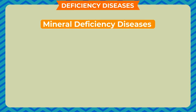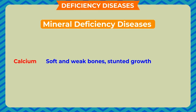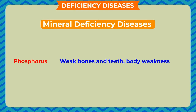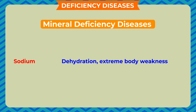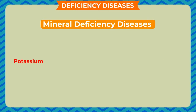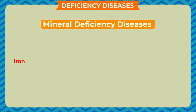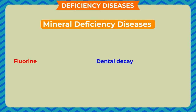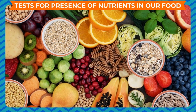Mineral deficiency diseases: deficiency of calcium causes soft and weak bones and stunted growth. Deficiency of phosphorus causes weak bones and teeth and body weakness. Deficiency of sodium causes dehydration and extreme body weakness. Deficiency of potassium causes muscle weakness and paralysis. Deficiency of iron causes anemia. Deficiency of iodine causes goiter and enlarged thyroid. Deficiency of fluorine causes dental decay.